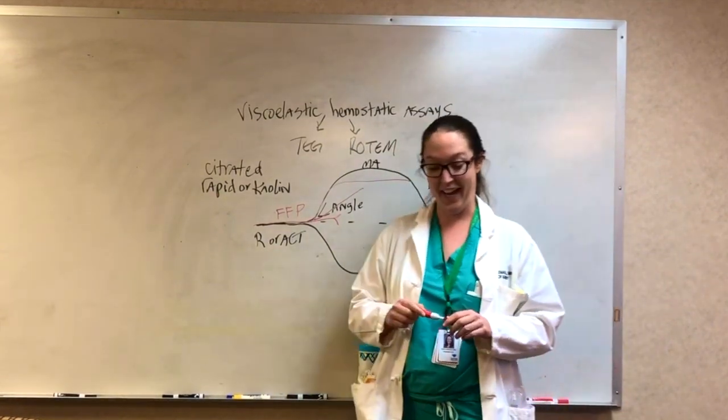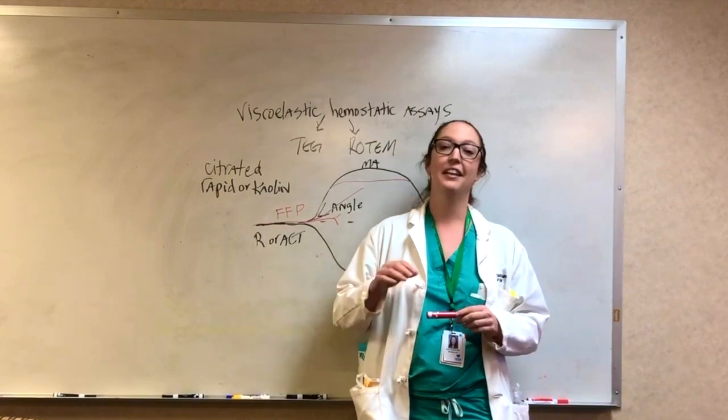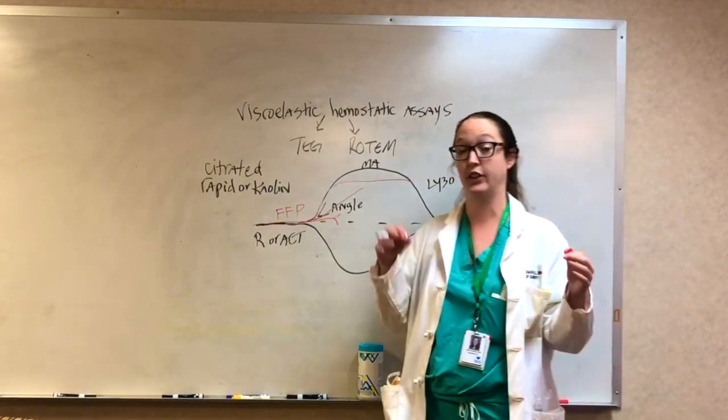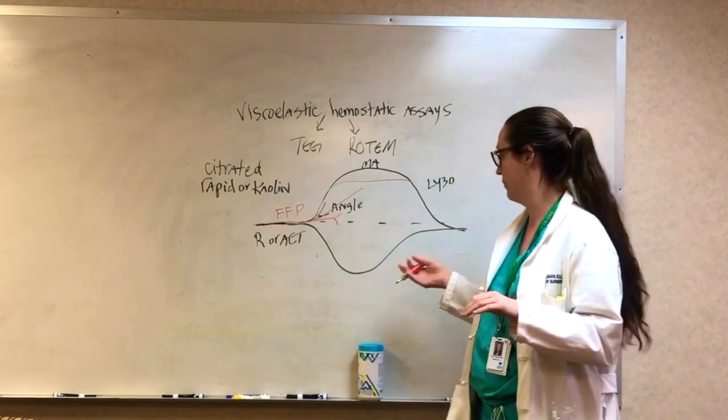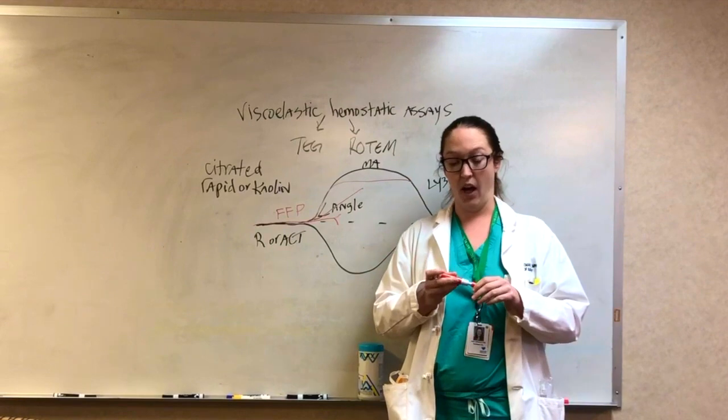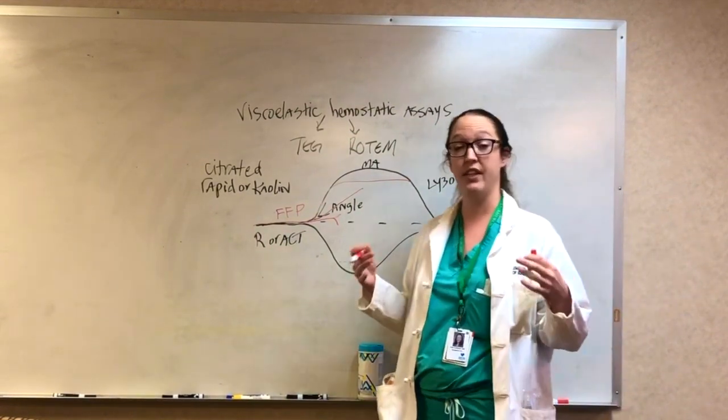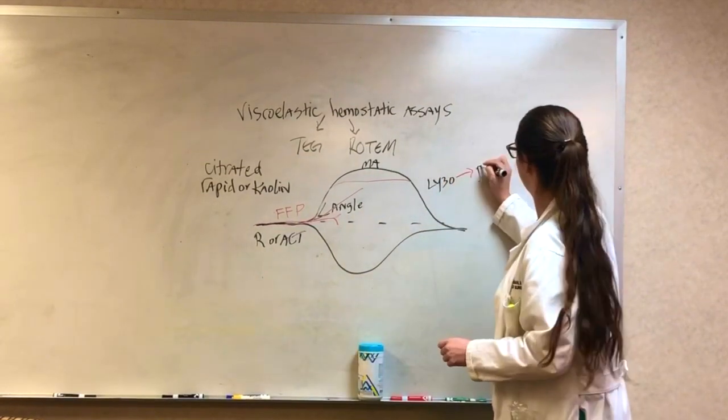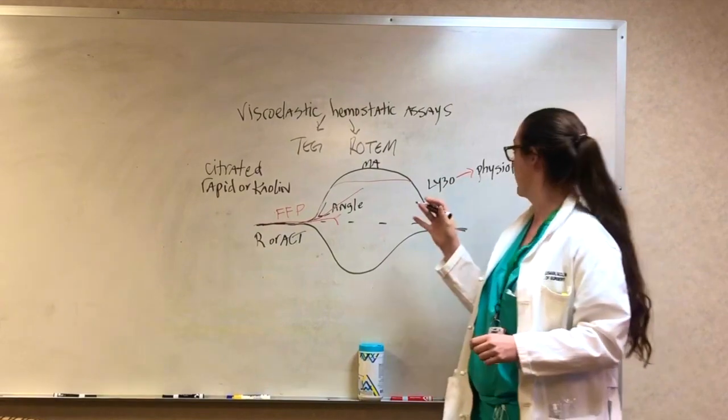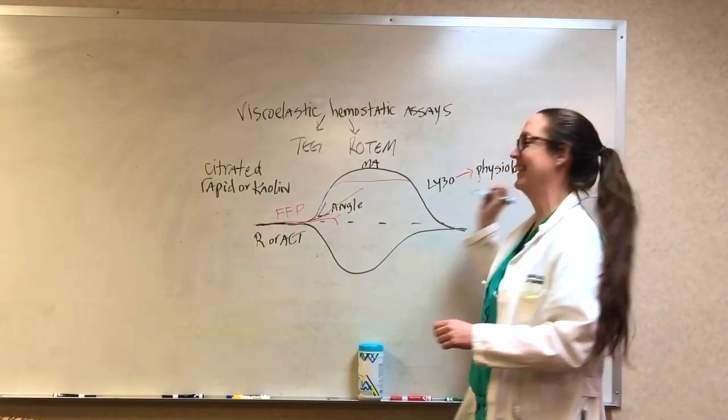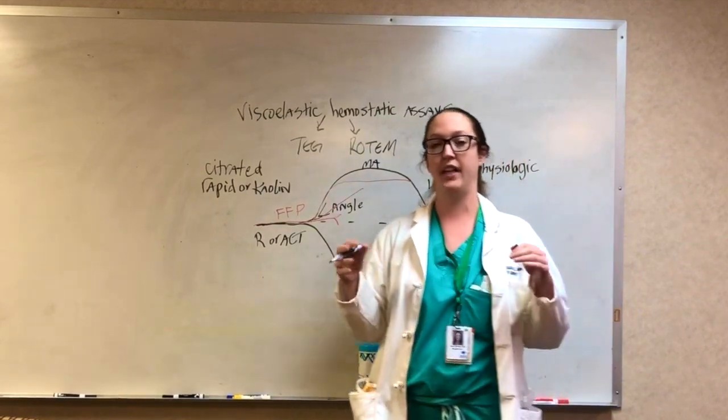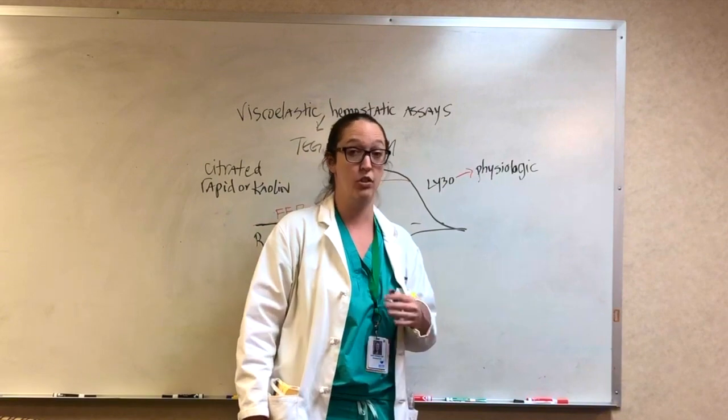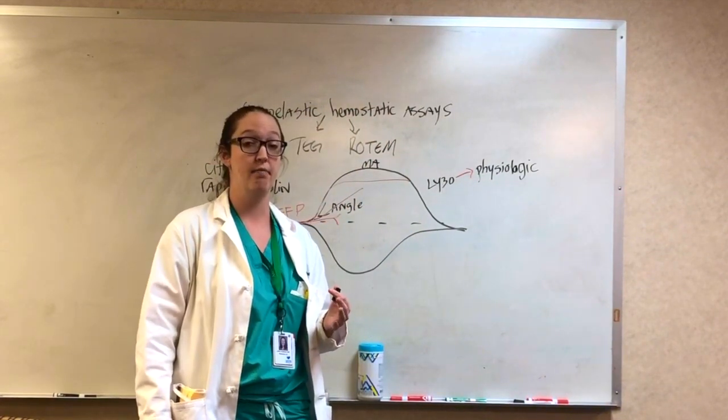And then lastly, we get to LY30, and this is the area of controversy, the fun thing to talk about. And there's a different approach to this depending on the institution that you're at. So LY30, again, is fibrinolysis 30 minutes after maximal clot strength. We know there are three different types of fibrinolysis, and these have been described phenotypically at our institution several years ago. You can have physiologic fibrinolysis, which is the normal amount of clot formation and breakdown that happens all the time in your blood vessels to maintain vascular patency. This is in the minority of trauma patients. Most trauma patients, around 80%, present with a pathologic phenotype fibrinolysis, and that can be in one of two forms.